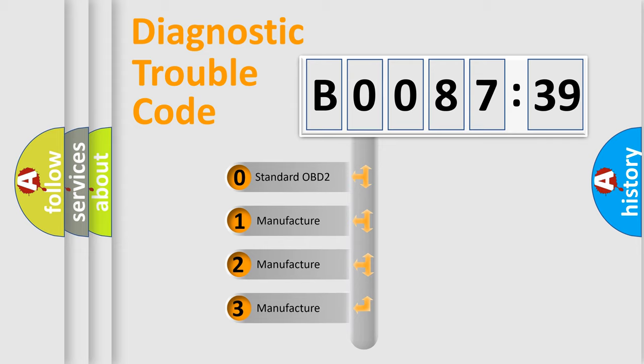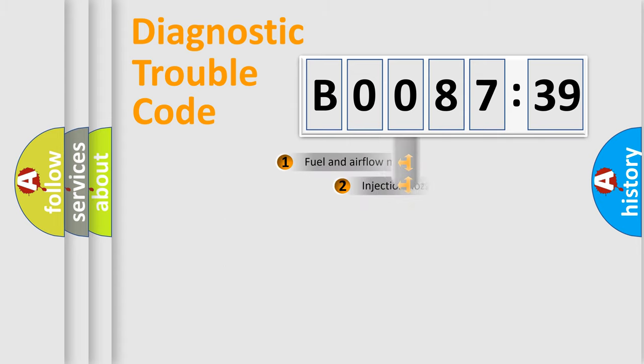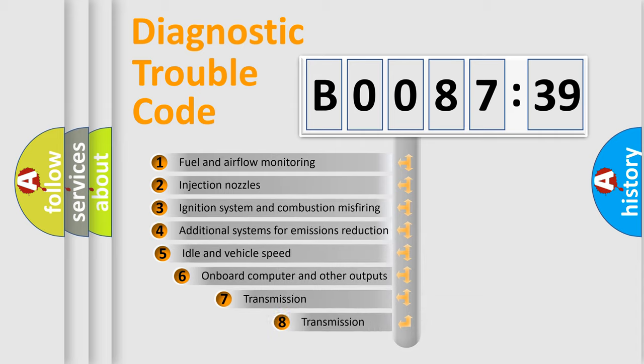If the second character is expressed as zero, it is a standardized error. In the case of numbers 1, 2, or 3, it is a more prestigious expression of the car-specific error.